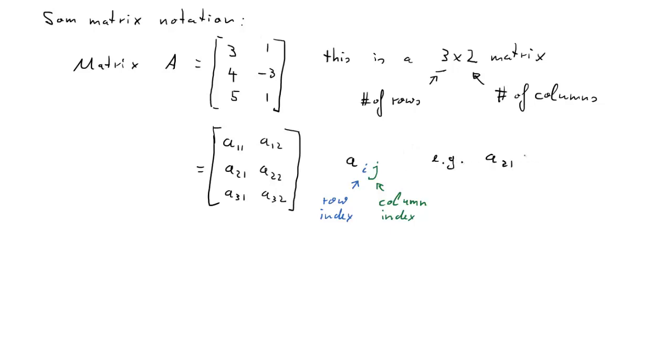So for instance, if we take element A_21, looking at the element in the second row and the first column, that takes a value of 4 in our matrix A. A_32 is the third row, second column, that is a value of 1.